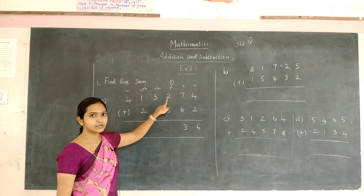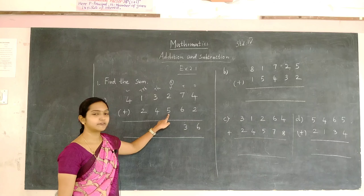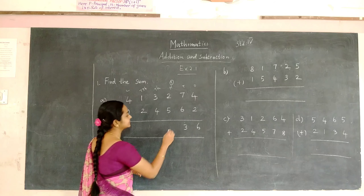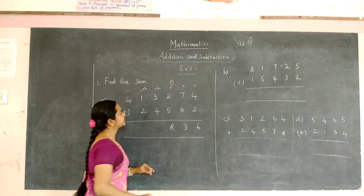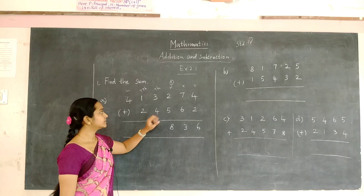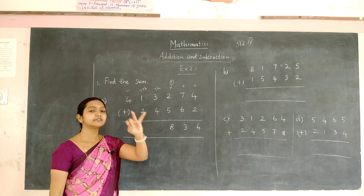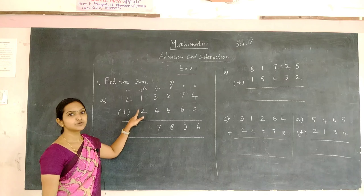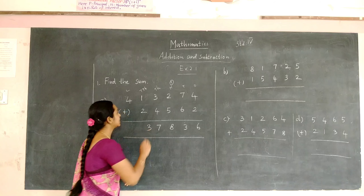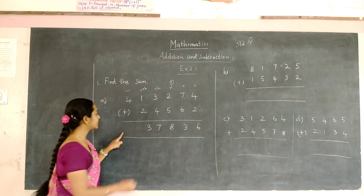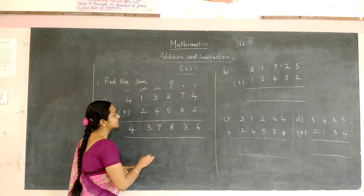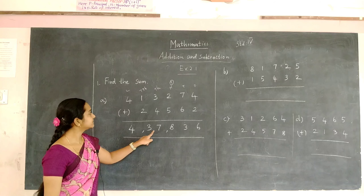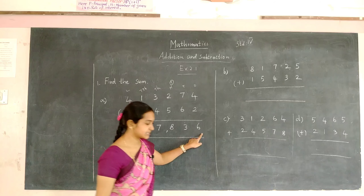2 plus 1 will be 3. To 3 you have to add 5, that is 4, 5, 6, 7, and 8. You have to add 3 and 4, that is 4, 5, 6, and 7. 2 plus 1 will be 3. Here we don't have any number, so write 4 as it is. We have got the answer: 4,37,836.